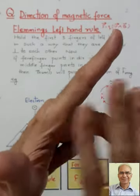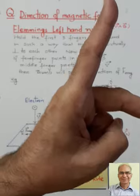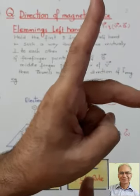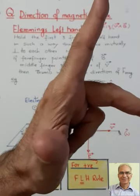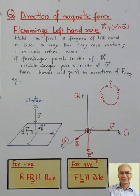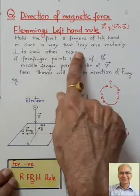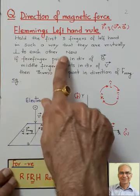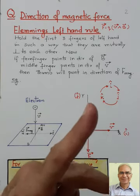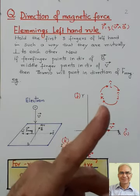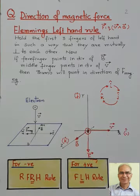Let me repeat: hold the first three fingers of the left hand such that they are mutually perpendicular to each other. If the four fingers point in the direction of the magnetic field and the middle finger points in the direction of the velocity of the charged particle, then the thumb will point in the direction of the magnetic force.